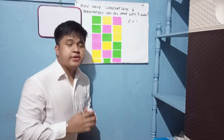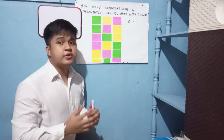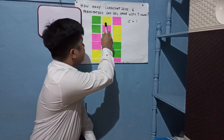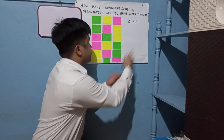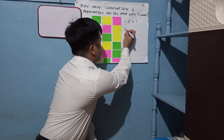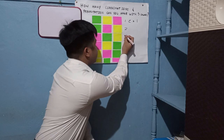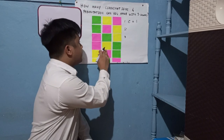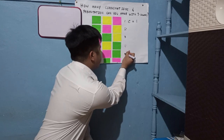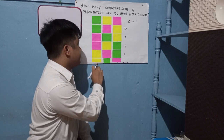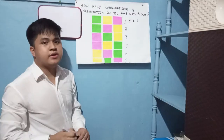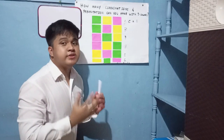For permutation, the order of the color does matter. So let's list the possible color arrangements. Green, yellow, and pink is the first permutation. Green, pink, and yellow is the second permutation. Pink, green, and yellow is the third permutation. Pink, yellow, and green is the fourth permutation. Yellow, pink, and green is the fifth permutation. And lastly, yellow, green, and pink is the sixth. Therefore, with three colors, there are six permutations.